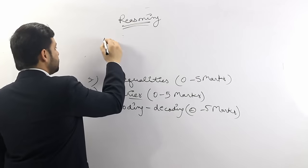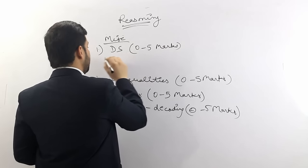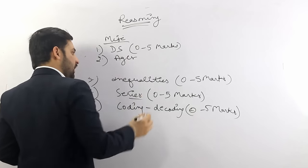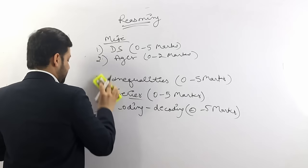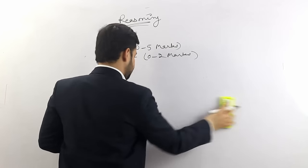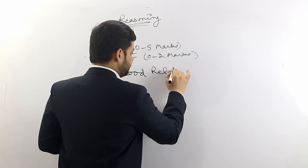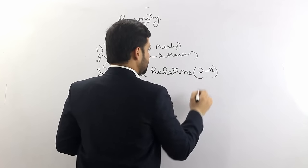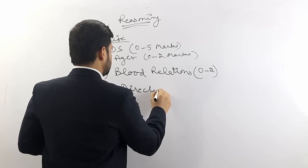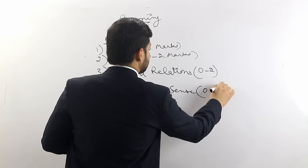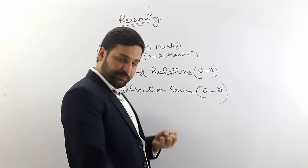There are miscellaneous topics in reasoning as well, such as data sufficiency (0 to 5 marks), problems based on ages, and blood relations (0 to 2 marks). These are the chapters that are important — actually that is the syllabus — for the SBI PO exam.